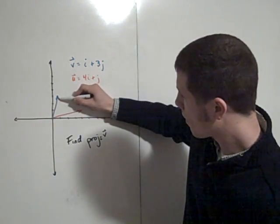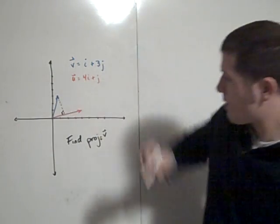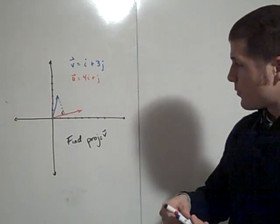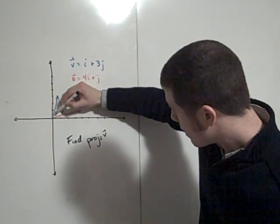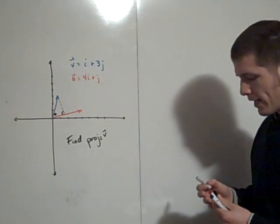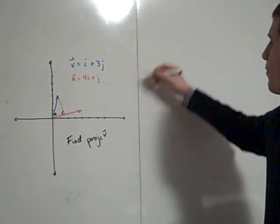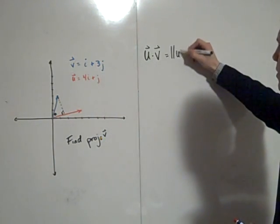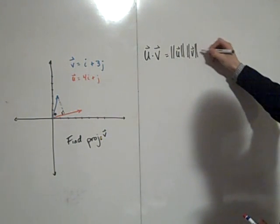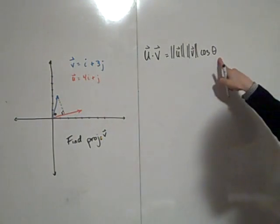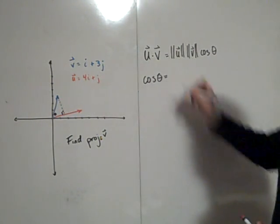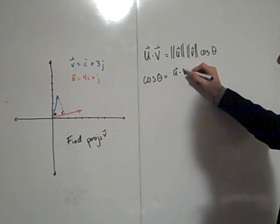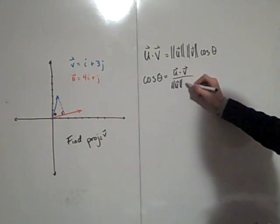To find the projection, we need to know the angle theta between the two vectors. This is where the dot product comes in: u dot v equals the magnitude of u times the magnitude of v times cosine of theta. So cosine of theta equals u dot v divided by the magnitude of u times the magnitude of v.